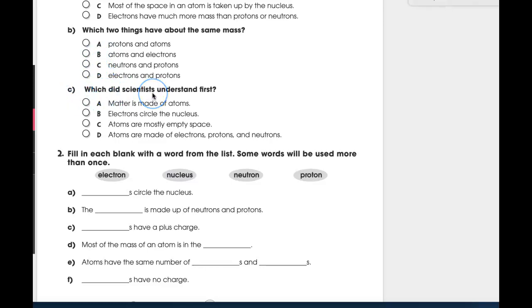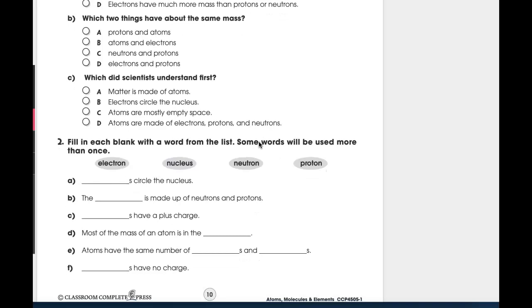Letter C, which did scientists understand first? A, matter is made of atoms. B, electrons circle the nucleus. C, atoms are mostly empty space. Or D, atoms are made of electrons, protons, and neutrons. What did they understand first? The key here is the word first. You'll have to go back to your reading to think about what scientists understood first.